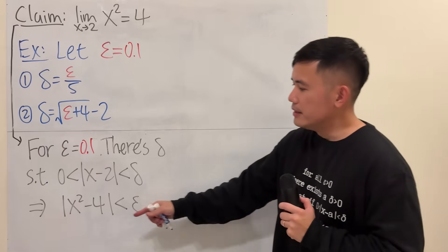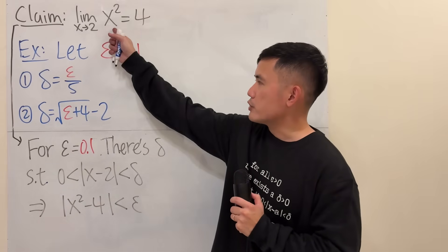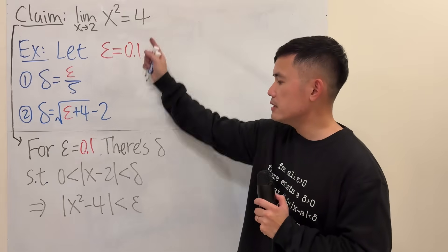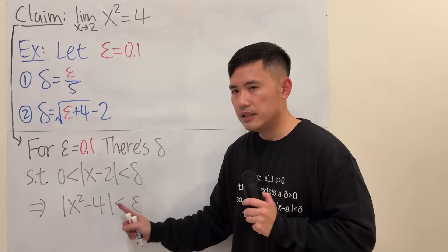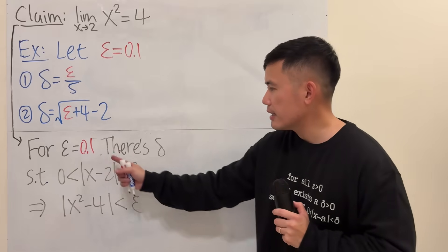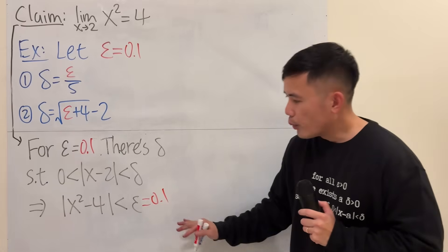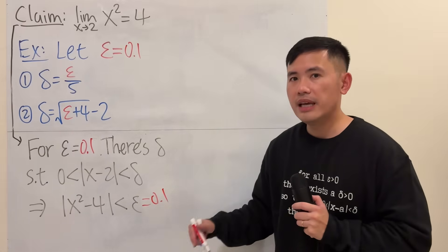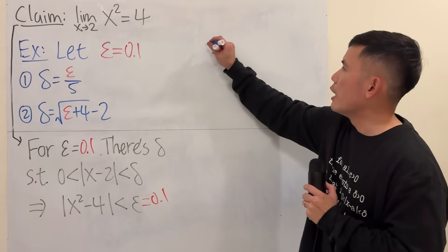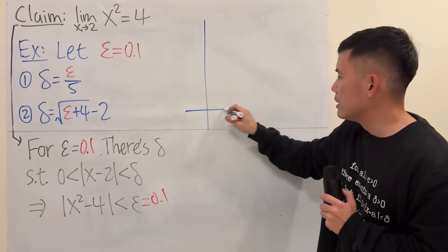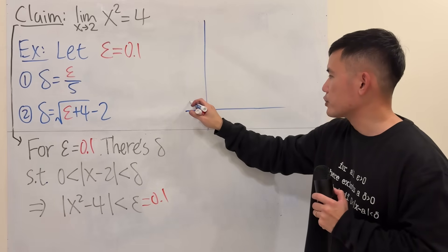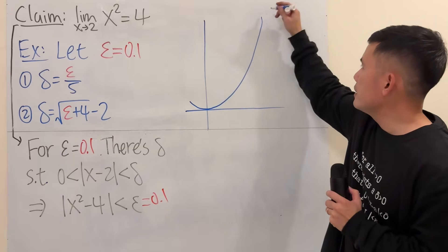And then, this right here says what? x squared, which is our function, and the 4, which is our limit. Their distance is less than the epsilon that we selected earlier, which is 0.1. Now, we are going to begin by looking at this. And here is a picture that will help us visualize. And of course, we are talking about the function x squared.